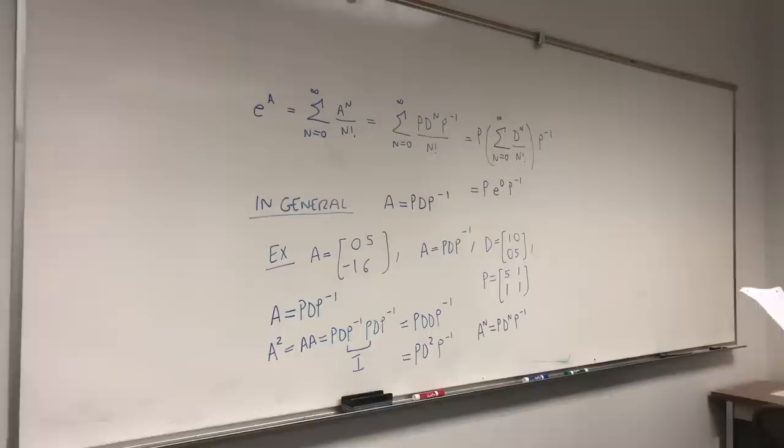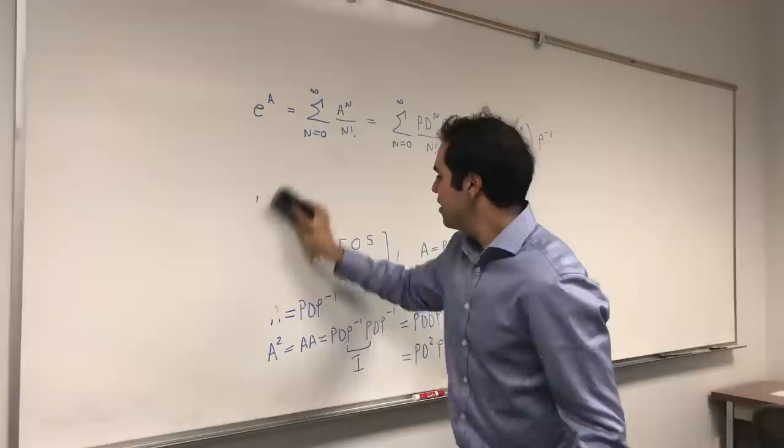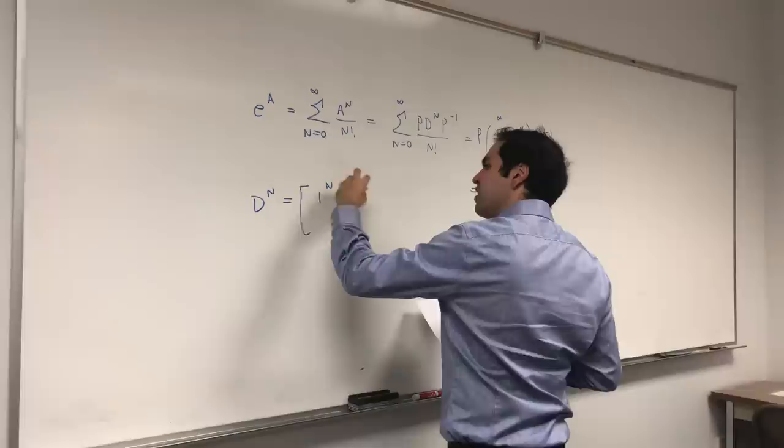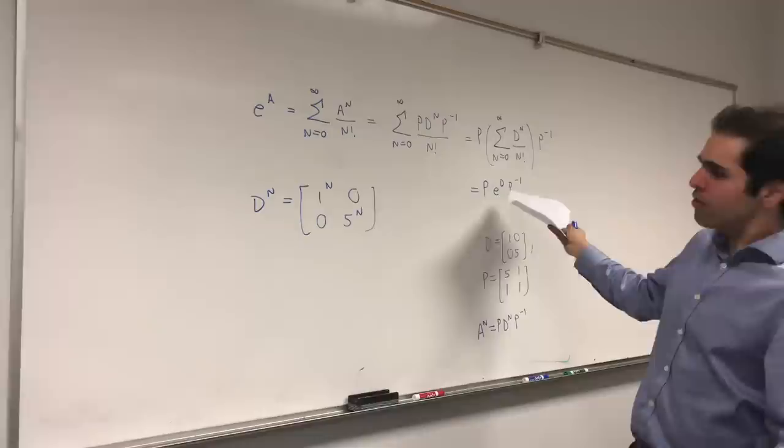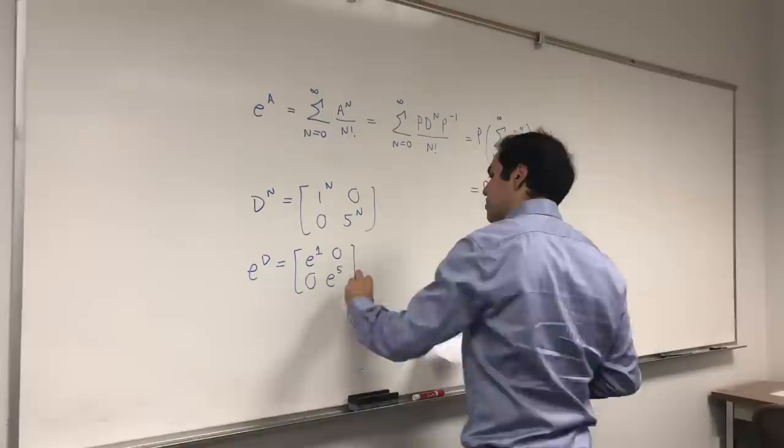Almost looks like pi M, or PDEs, I guess. But, the point is, actually, E to the D for diagonal matrices are very easy to calculate, because, if you take powers of diagonal matrices, if you take D to the N, it turns out you just raise the entries by N. So, D to the N is 1 to the N, 0, 0, 5 to the N. So, I'm not going to prove this, but it turns out if you do E to the D, that just becomes E to the 1, 0, 0, E to the 5.